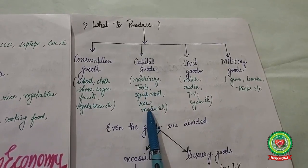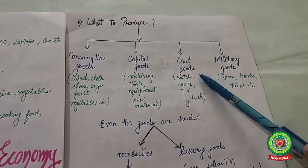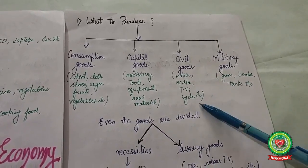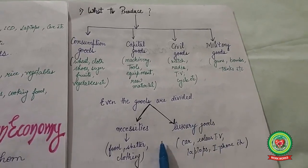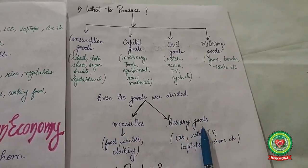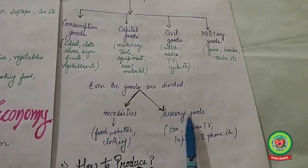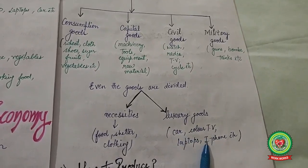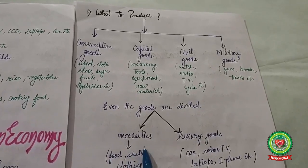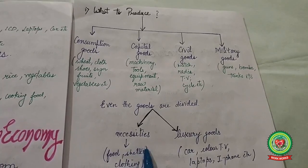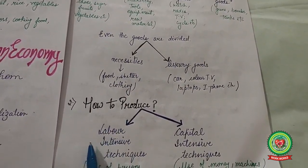Further, civil goods include watches, radios, TVs, and cycles, while military goods include guns, bombs, and tanks. Goods are also divided into necessities of life — food, shelter, clothing — and luxury goods — cars, color TVs, laptops, and iPhones. The producer must decide what type of goods to produce and in what quantities by observing market demand.